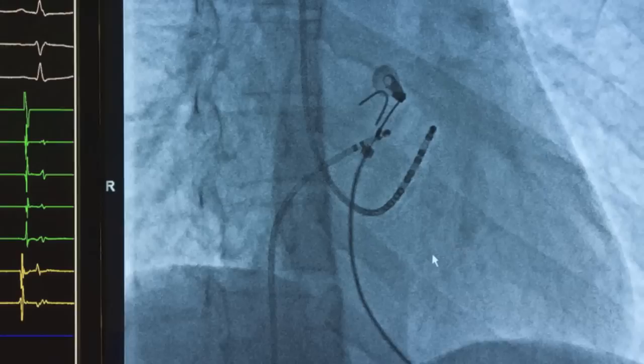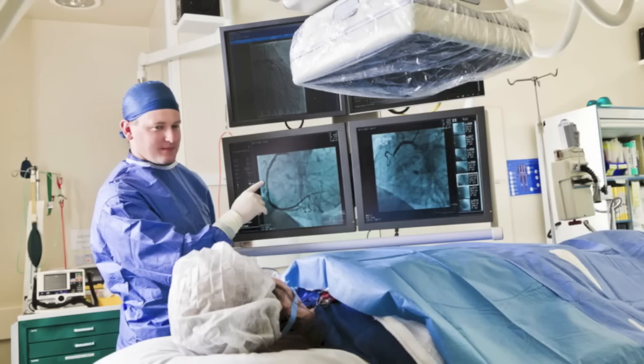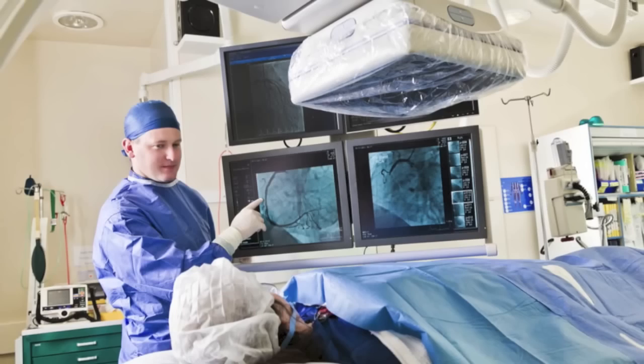Through the catheter, your doctor may put a special type of dye in the catheter. The dye will flow through the bloodstream to your heart. Then your doctor will take x-ray pictures of the heart. The dye will make your coronary arteries visible in these pictures. This test is called a coronary angiography.